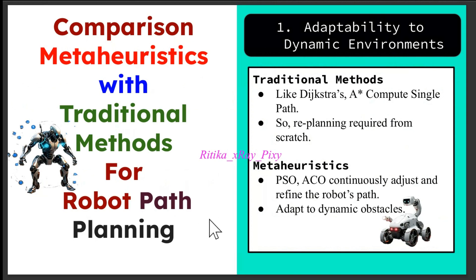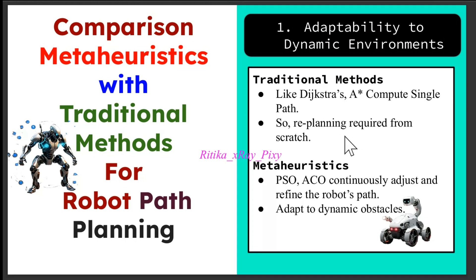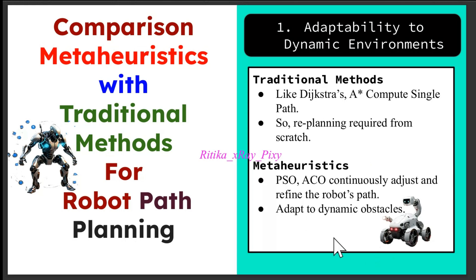We will compare traditional methods with metaheuristic optimization algorithms and check how these algorithms are suitable for robot path planning. Traditional methods like A* compute a single static path, and if the environment changes these methods require re-planning, which can be time-consuming and sometimes inefficient in real-time scenarios — for example, for self-driving cars needing real-time adjustment.